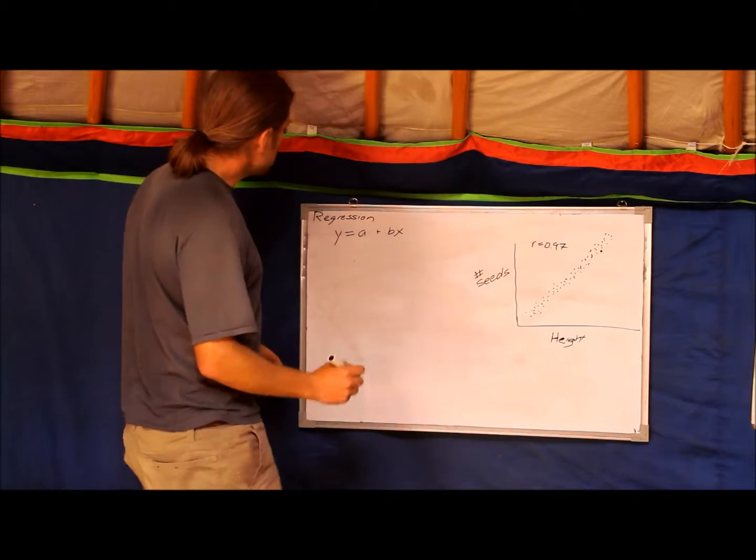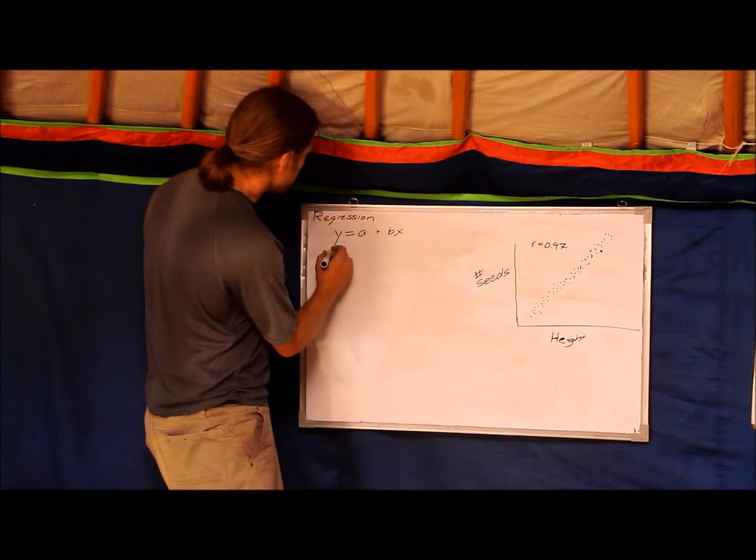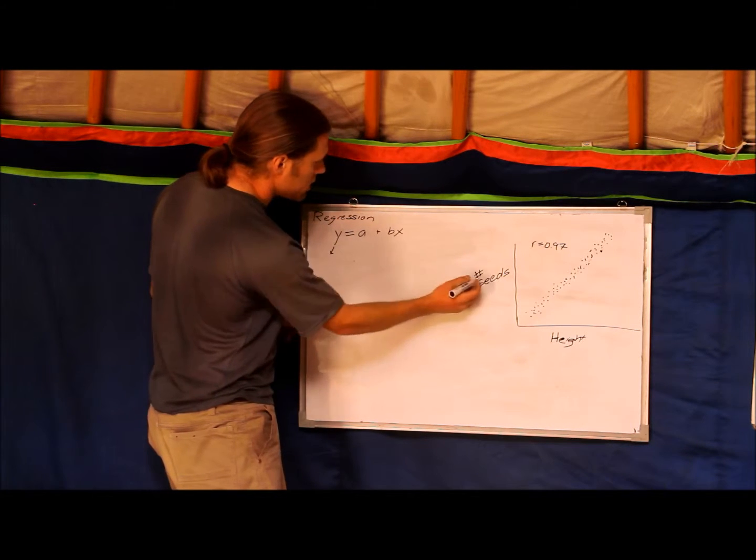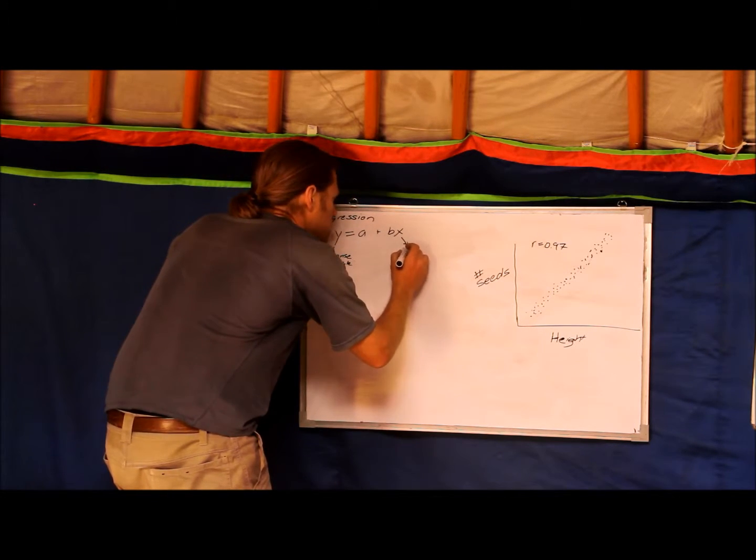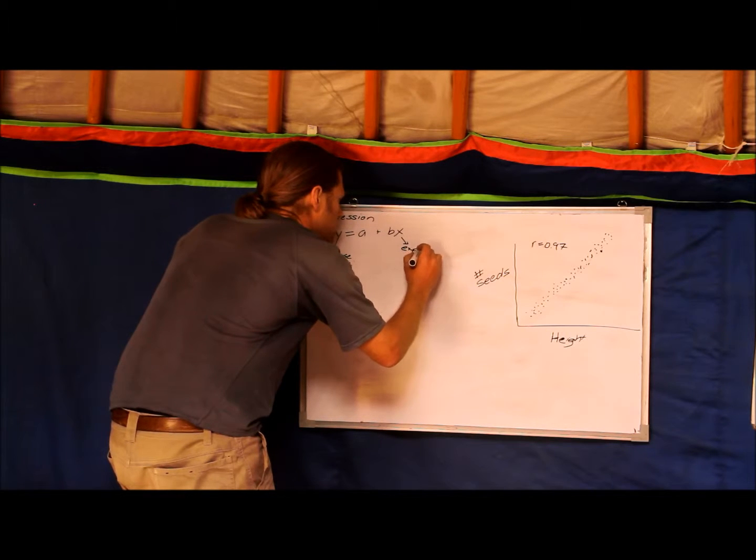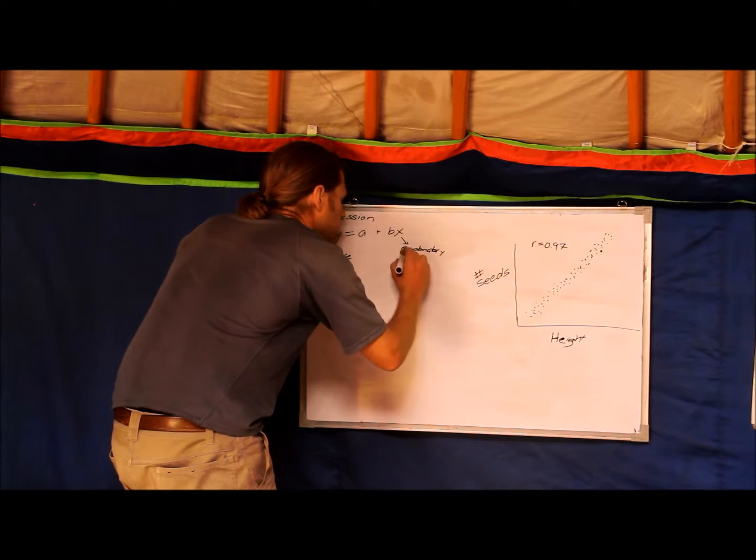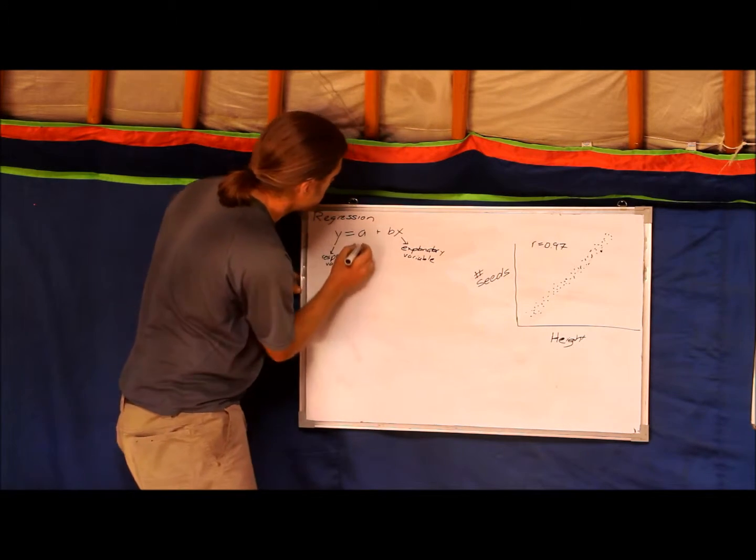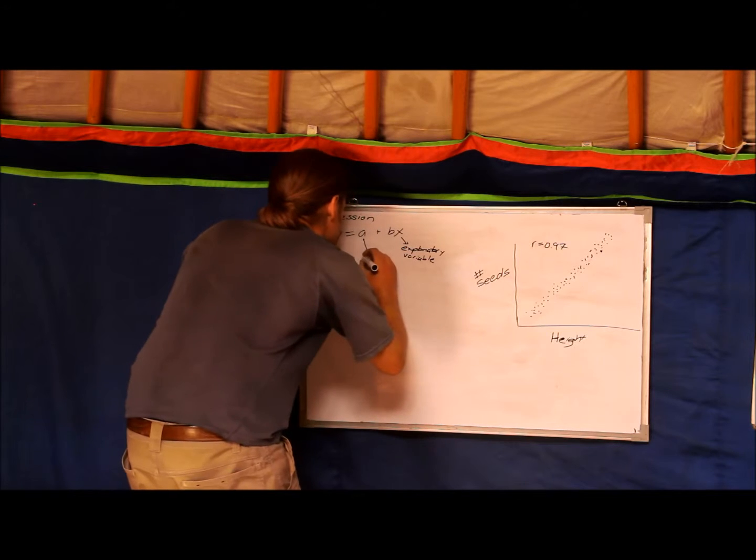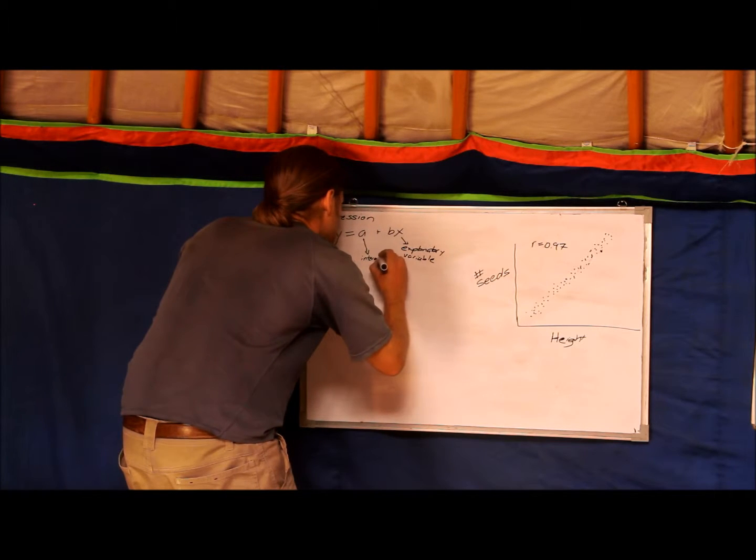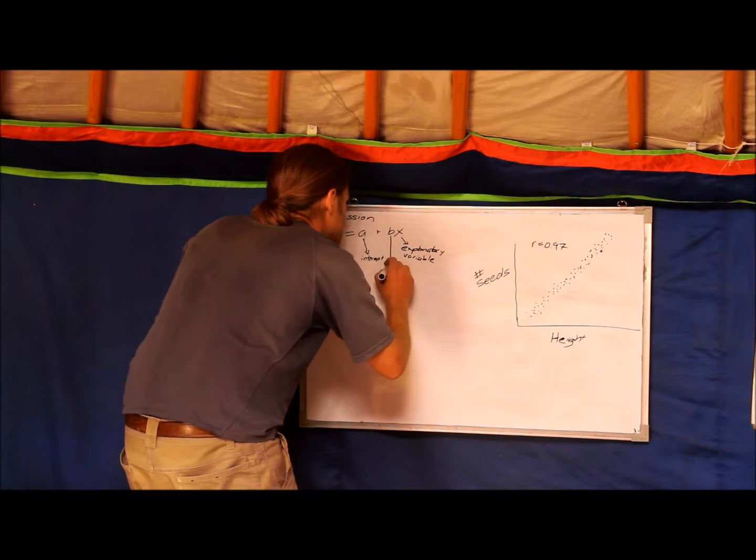What that means is that Y here is your response variable, so in this case it's seeds. X is your explanatory variable. A is your intercept, and B is your slope.